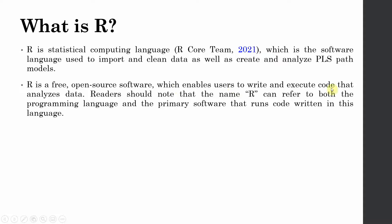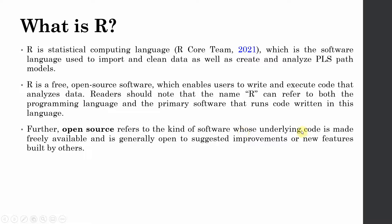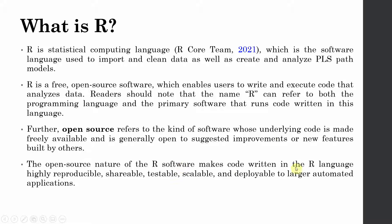R enables users to write and execute code that analyzes data. Readers should note that R can refer to both the programming language and the primary software that runs code written in this language. Open source refers to software whose underlying code is made freely available and is generally open to suggested improvements or new features built by others. The open source nature of R makes code written in R highly reproducible, shareable, testable, scalable, and deployable to larger automated applications.